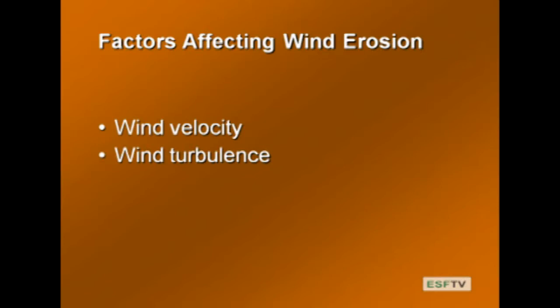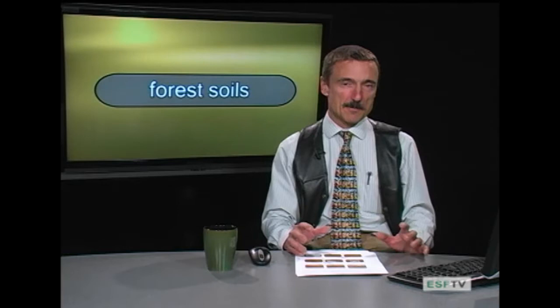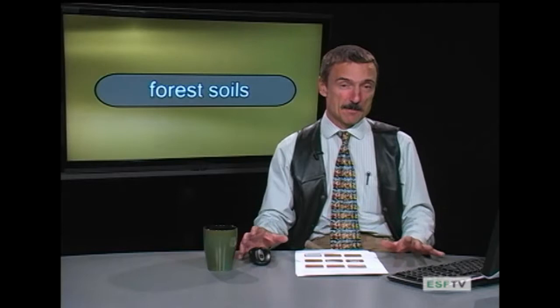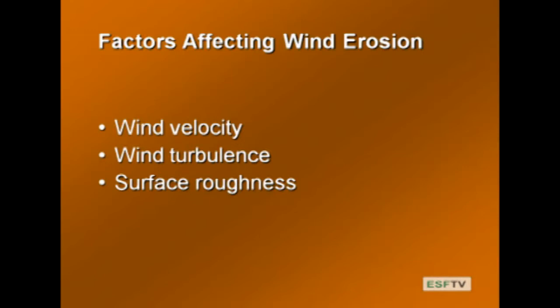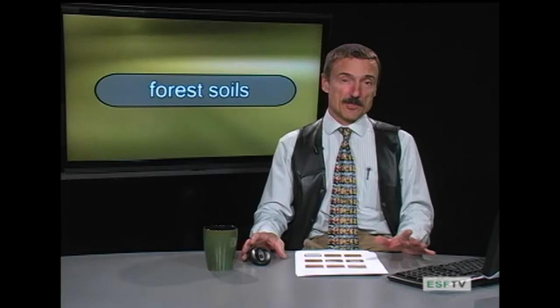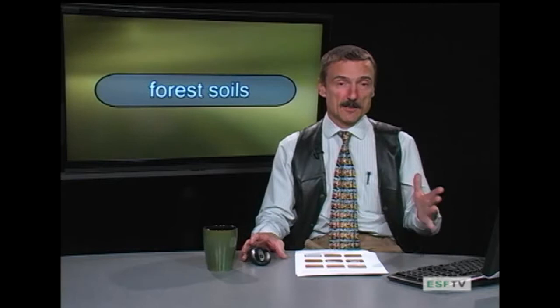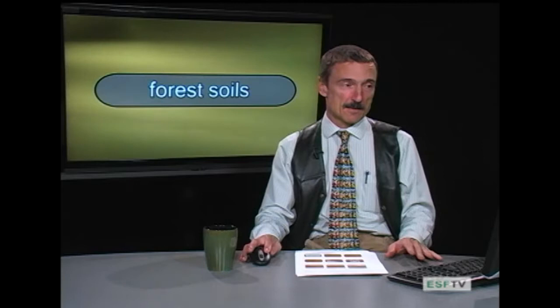Next, turbulence. The wind is not constant; the greater the turbulence, the greater the probability of picking up particles. You get bursts of wind, changes from slow to fast — more turbulence means greater propensity for wind erosion. Then there's surface roughness. Smooth surfaces allow greater erosion; rough surfaces — with small rifts and valleys — reduce wind erosion. So our wind factors are velocity, turbulence, and surface roughness.